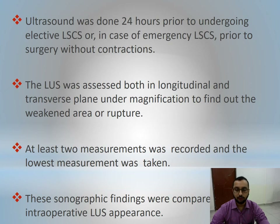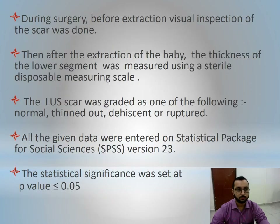These sonographic findings were compared with the intraoperative lower uterine segment appearance. During surgery, before extraction, visual inspection of the scar was done. Then after extraction of the baby, the thickness of the lower segment was measured using a sterile disposable measuring scale. The lower uterine segment scar was graded as one of the following: normal, thinned out, dehiscent, or ruptured.